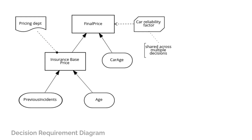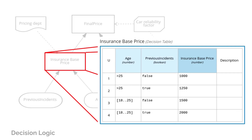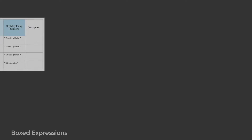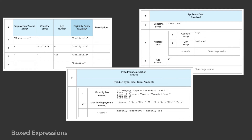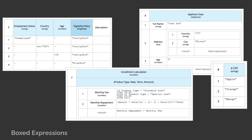Behind each element in the graph, you can find the supporting decision logic, typically in the form of decision tables. You are not limited to decision tables, however, as the DMN standard provides several types of boxed expressions, such as context to define structural data, function definition and invocation, list and relations.